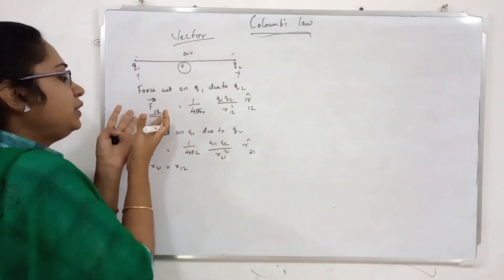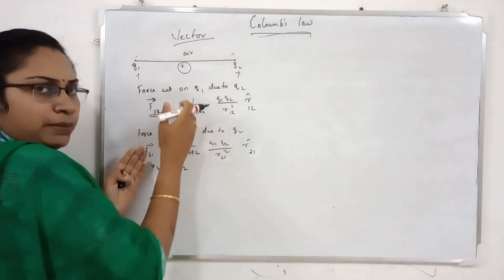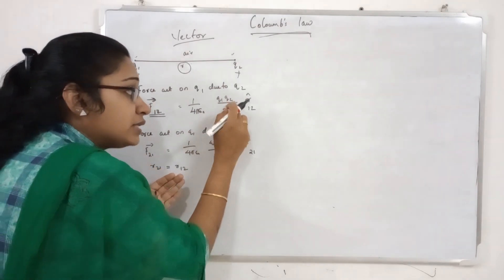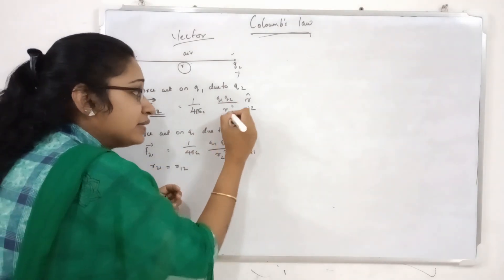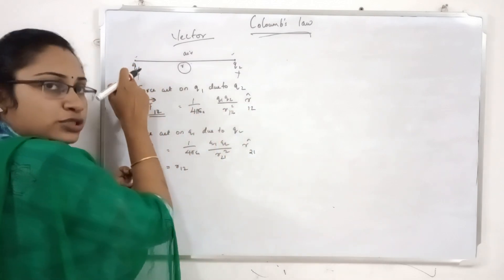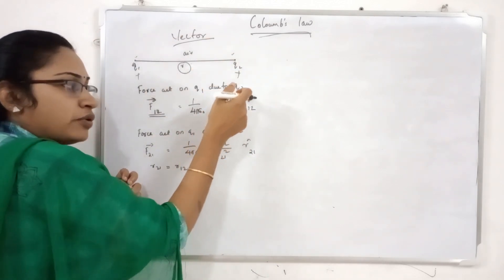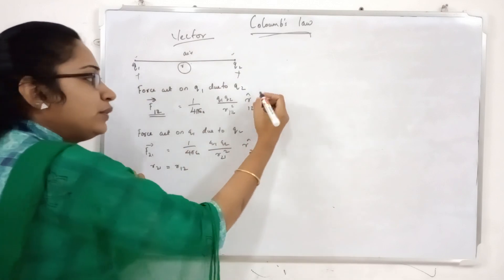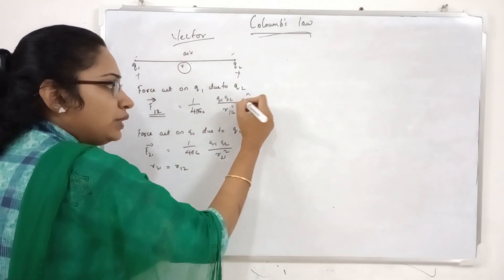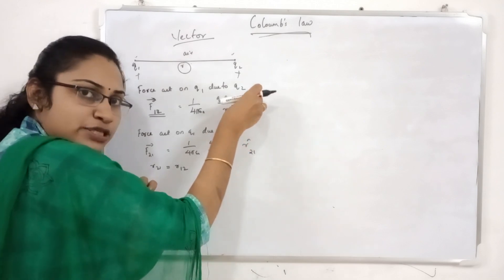The force is equal to F1,2. That is equal to 1 by 4 pi epsilon, Q1 Q2 divided by r squared. This is a vector — force acting on Q1 due to Q2 — with a direction component r hat, which is the displacement direction.